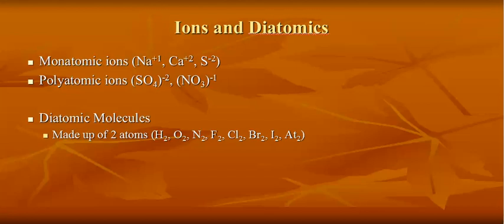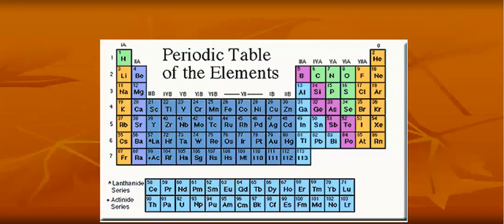Diatomic molecules are made up of two atoms whenever they're by themselves. There's always two of them, like H2, O2, N2, and so forth. When you look at the periodic table, I want you to know the diatomic molecules. They're really easy to pick out.